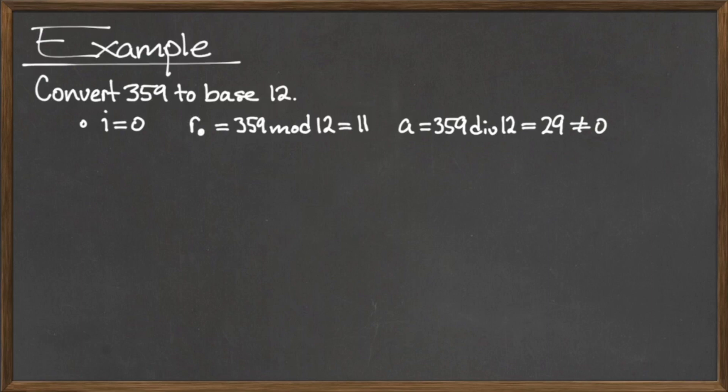Next, we redefine the variable a and assign it the value 359 div 12, which is 29, and then increment i by 1, so i is now equal to 1. The current value of a is 29, which is not equal to 0, so our stopping condition is not satisfied, and we must go through the loop again.